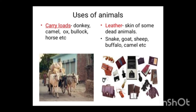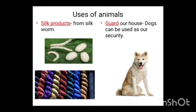Some animal skins are used to make products. Usually we use dead animal skin for making leather. For example, snake, goat, sheep, buffalo, camel, etc. From silkworm we get silk products — there are silk saris, pattas, etc. Dogs guard our house and are good security to us.